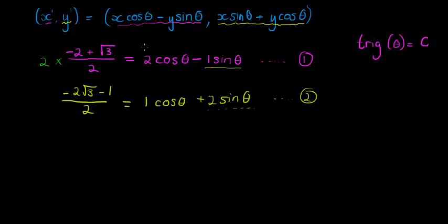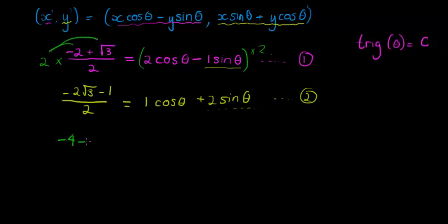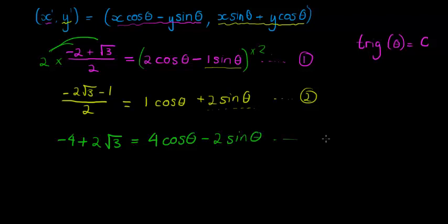Everything in equation 1 gets multiplied by 2. We want to keep the denominator of 2, so we multiply the 2 into the numerator. This gives us negative 4 plus 2 times the square root of 3 equals 4 cos theta minus 2 sine theta. This is our third equation.